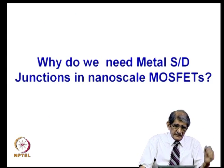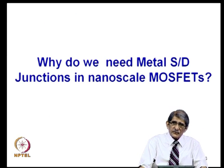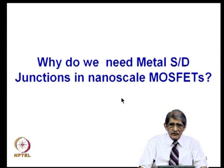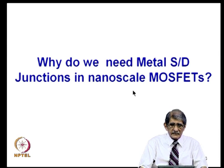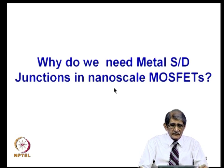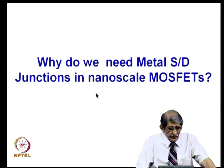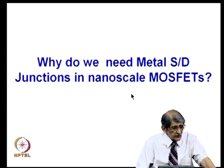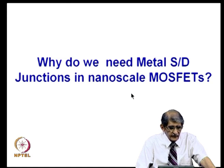The first question that comes to anyone's mind is: why do we need this type of change from the conventional p-n junction to metal source/drain junctions, particularly when you go to small scale or nanoscale MOSFETs?